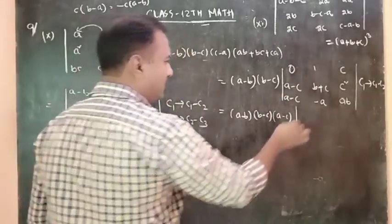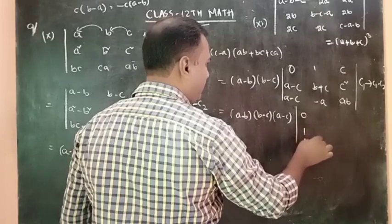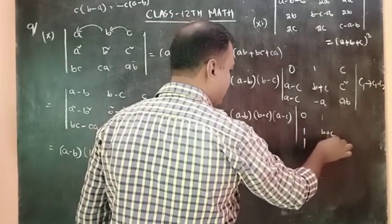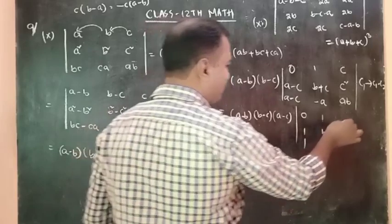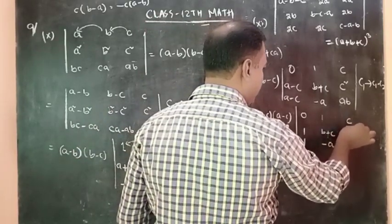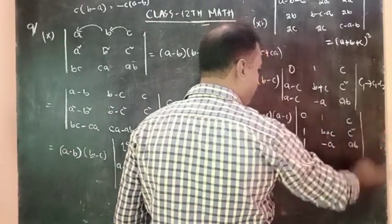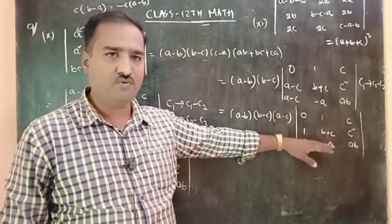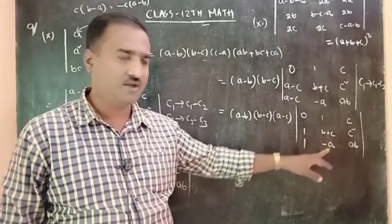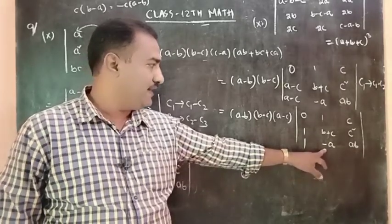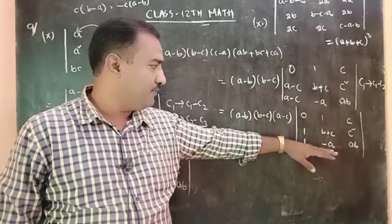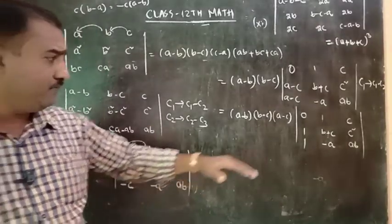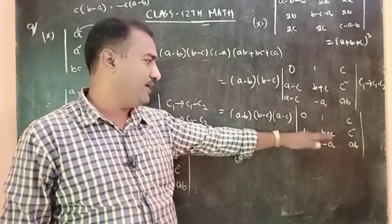All the columns give 0, 1, 1. So the matrix entries are: 1, B plus C minus A. Then C, C squared, AB. We can write a 0. The determinant becomes: 1, B plus C, C squared; then 1, minus A, AB; replacing row 2 by row 2 minus row 3.